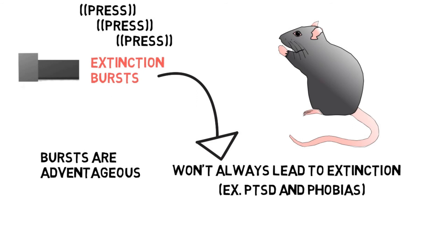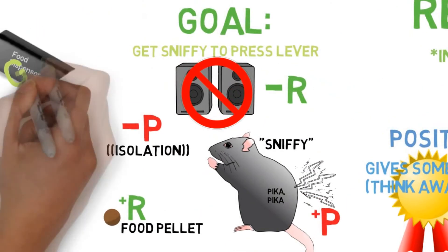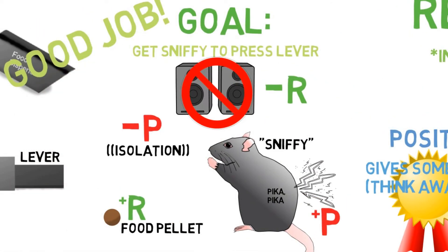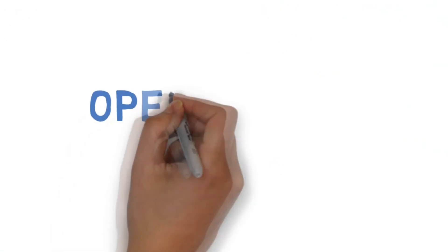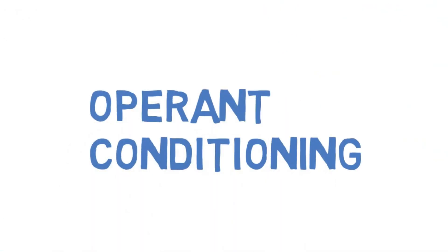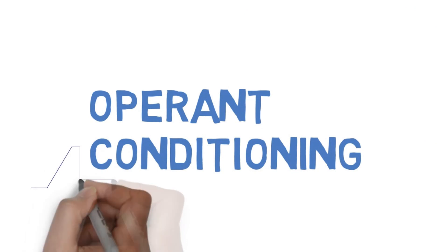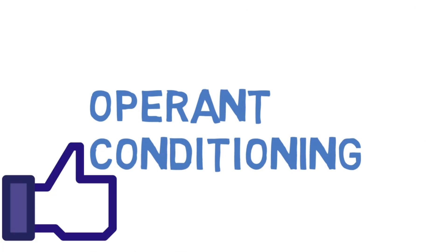So after learning this, you go back to the continuous reinforcement schedule and the mouse relearns his behavior. Good job! Today I covered operant conditioning — we looked at positive and negative punishments and reinforcements, as well as reinforcement schedules. Next time I'll cover classical conditioning. Like and subscribe for more videos. Thanks for watching.